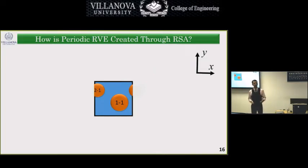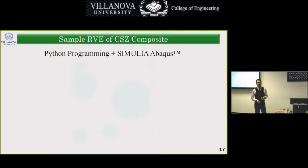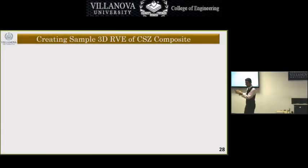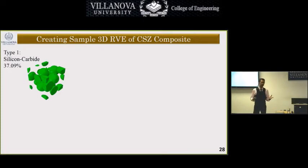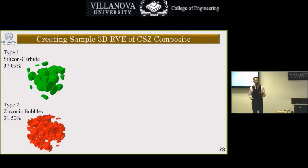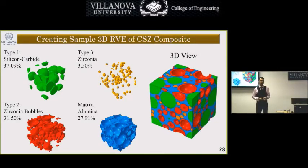The RSA algorithm is implemented using Python programming in conjunction with Simulia Abaqus. For a 3D realization of a CSZ composite, we start by creating silicon carbide inclusions. The thinking behind 3D sample creation is similar to 2D simulations, but technically the commands are very different, so a whole new set of codes had to be developed. For one CSZ sample, we add zirconia inclusions, then silicon carbide inclusions, then zirconia bubbles, then zirconia particles, and finally the matrix — producing a complete 3D RVE.